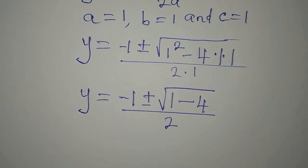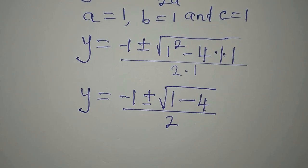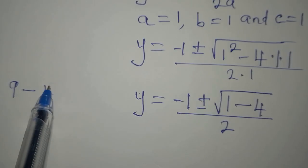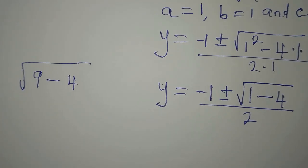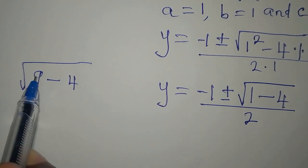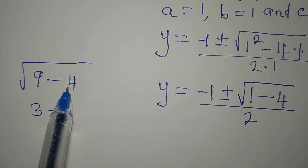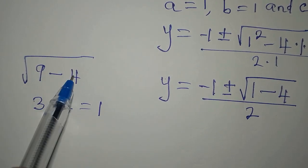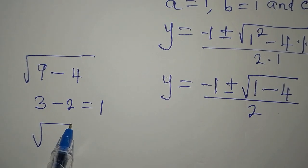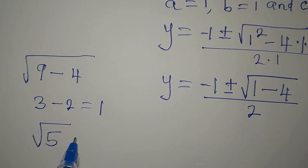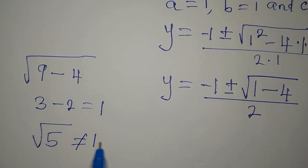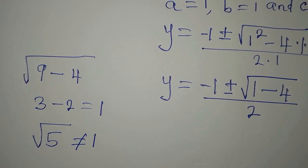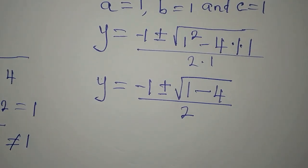To show why splitting the square root is incorrect: imagine you have square root of 9 minus 4. If you split it, you get square root of 9 minus square root of 4, which is 3 minus 2 equals 1. But if you subtract first, you get square root of 5, and square root of 5 does not equal 1. So you must simplify inside the square root before evaluating it.